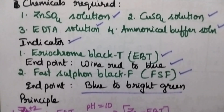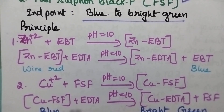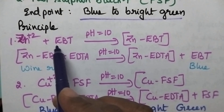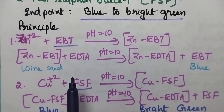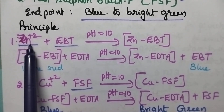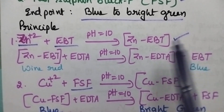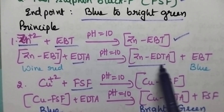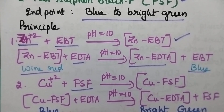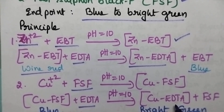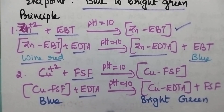Coming to the principle, we will consider two principles: one for the first step and one for the second step. The only difference is in the nature of the indicator. In the first step, the molarity of the EDTA solution is determined using zinc sulfate solution; zinc forms an unstable complex with EBT indicator and then a stable complex with EDTA, giving a color change from wine red to blue. In the second step, copper initially forms an unstable complex with Fast Sulphone Black F and then a stable complex with EDTA, giving a color change from blue to bright green.